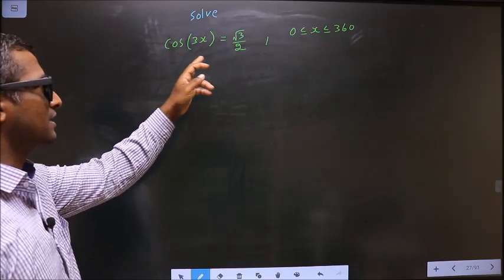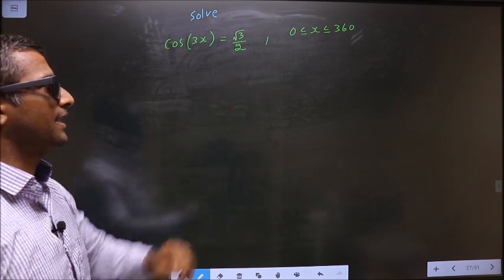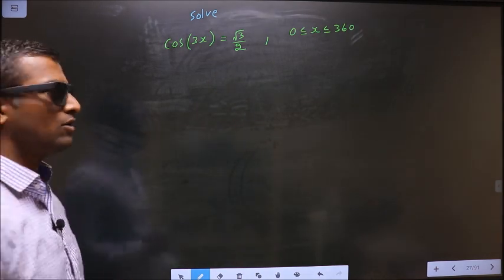Solve cos 3x equal to root 3 by 2 where x lies in the interval 0 to 360 degrees. Here they told you to solve.